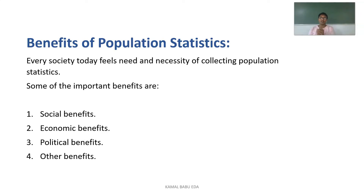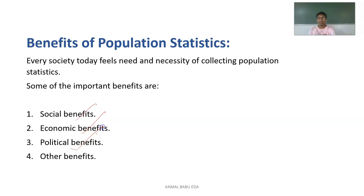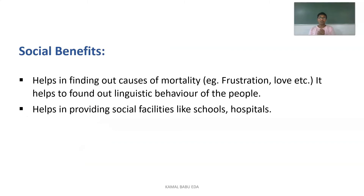When you have particular data regarding a society or community, for example if you want to include any kind of health services or provide any service to the community, first you should know how many people are living there. Once you know the population size, you can estimate their needs and how much is required. The benefits include social, economic, and political benefits.